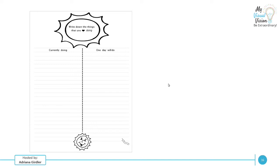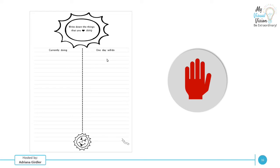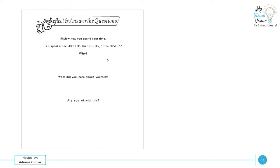Now we get to a little bit of the fun stuff: write down the things that you love doing. We touched on this in step one, but now I want you to think deeper. What do you currently do that you love? Also create a list of things you love doing that you will one day do — perhaps you just don't have time right now. We want to capture what our heart's desires are, so pause this video and really focus on creating this list.